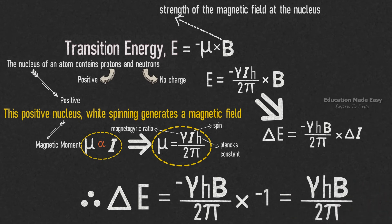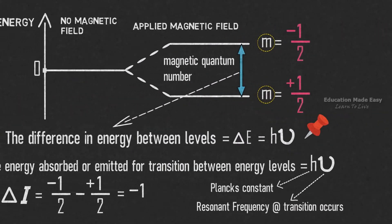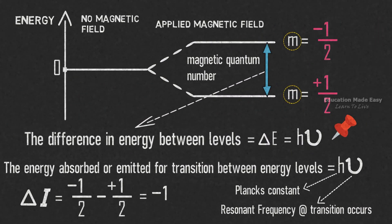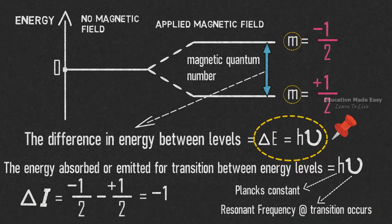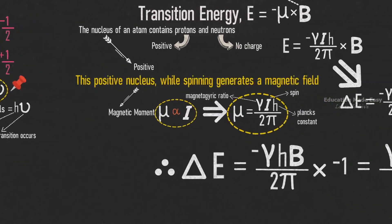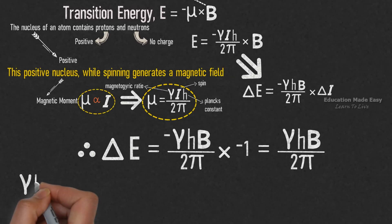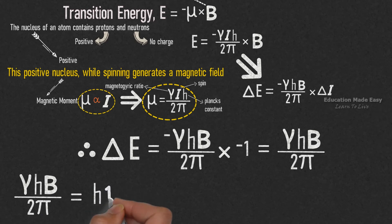But in the beginning, we already pinned the equation ΔE is equal to hν. Therefore, we can write γhB divided by 2π is equal to hν.